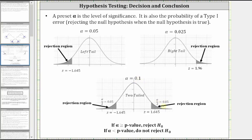If we were comparing the z-score for the sample data to the level of significance, and the z-score of the sample data fell in the rejection region, we would reject the null hypothesis. If the z-score of the sample data was not in the rejection region, we would not reject the null hypothesis. In our case, we're comparing alpha and the p-value. When alpha is greater than or equal to the p-value, we reject the null hypothesis. If alpha is less than the p-value, then we do not reject the null hypothesis.